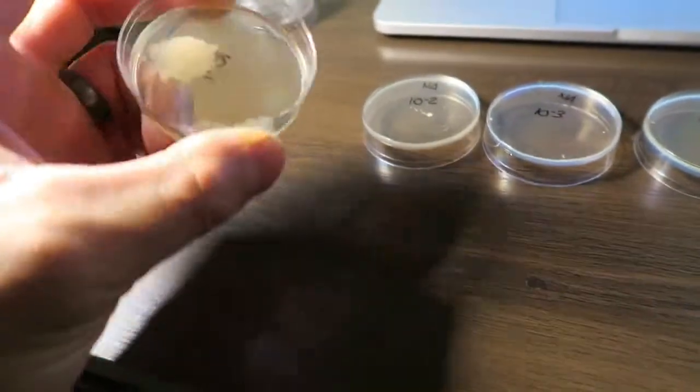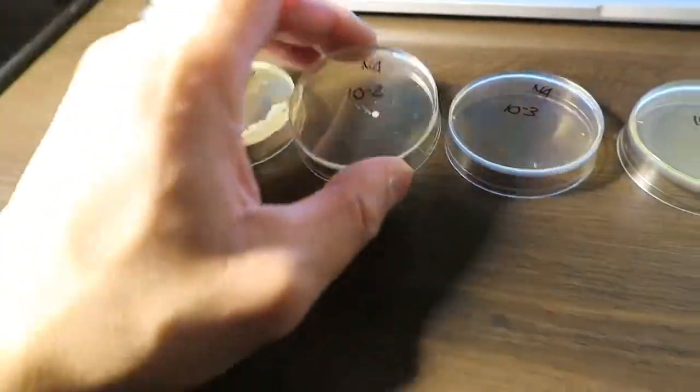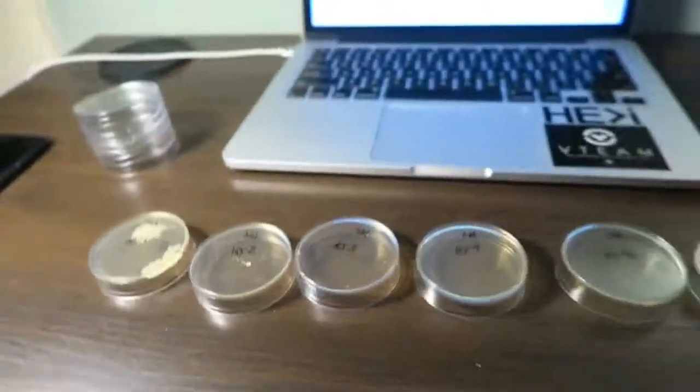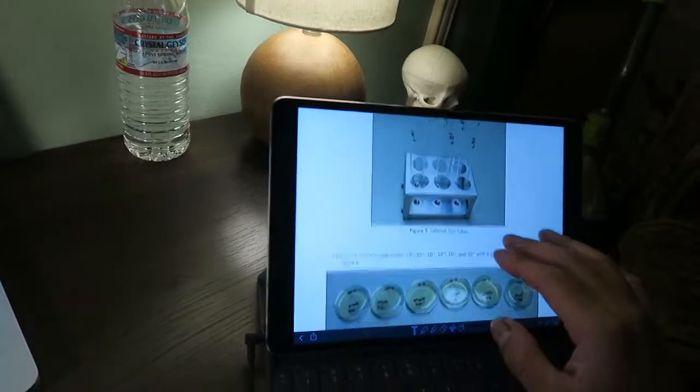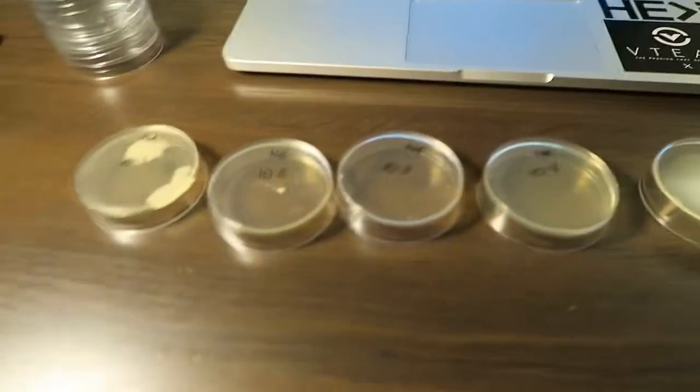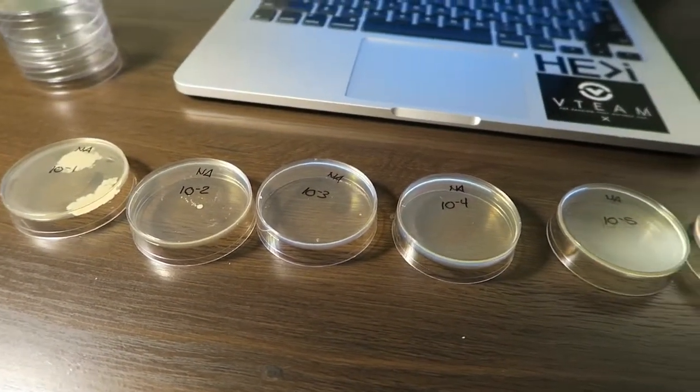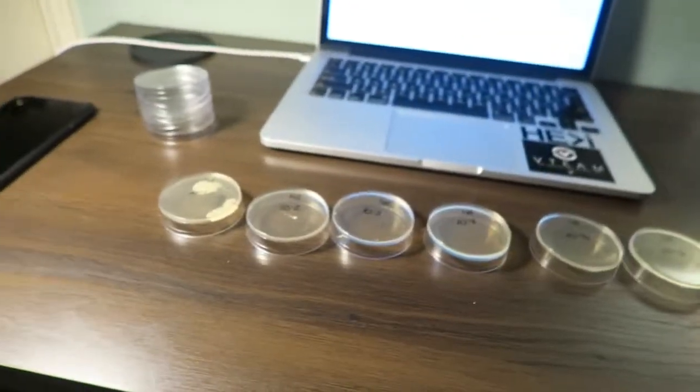So when I did pour them, I swirled them around so that it evenly goes over the agar on each of them. Even with the yeast, I let it soak for over 10 minutes. I put distilled water. So I don't know what happened. I'm thinking the dilution process of switching from the pipettes to each test tube—that's where I think it might have gone wrong.